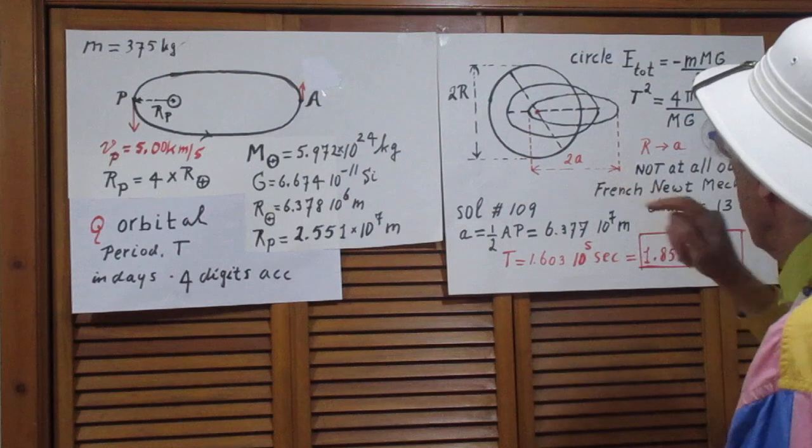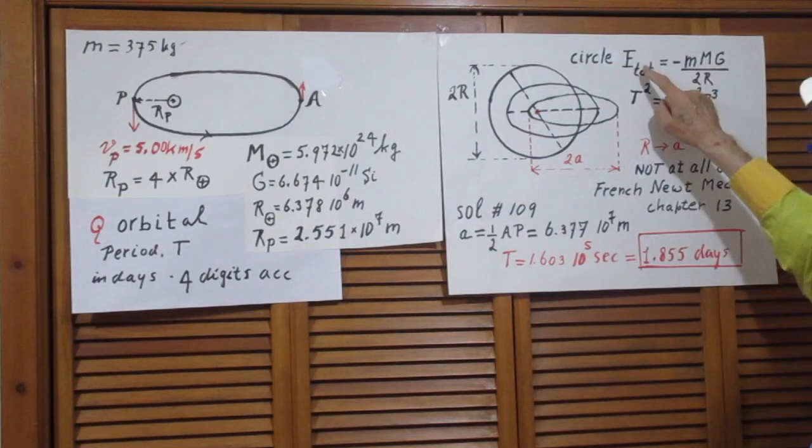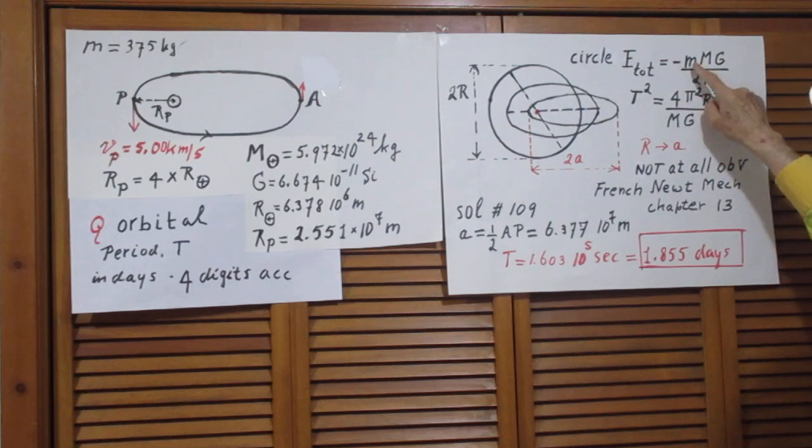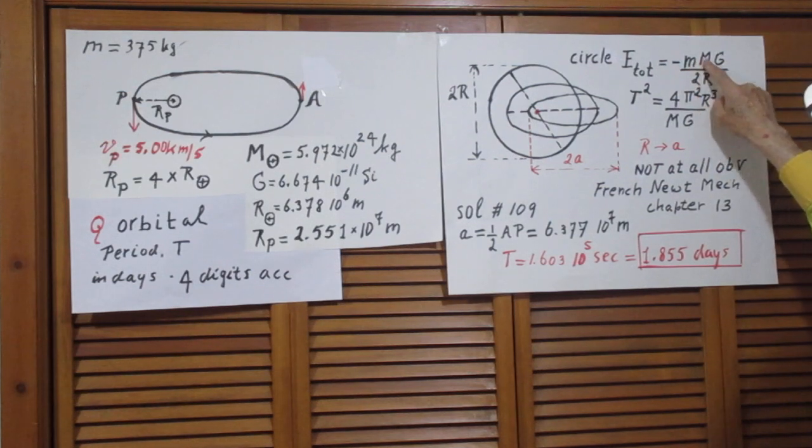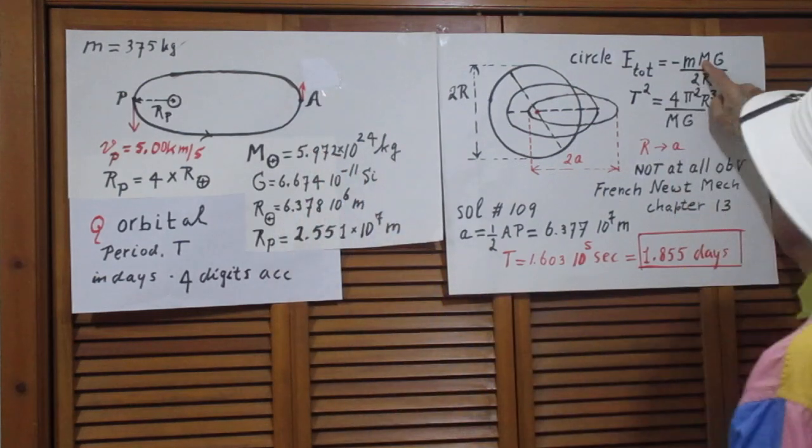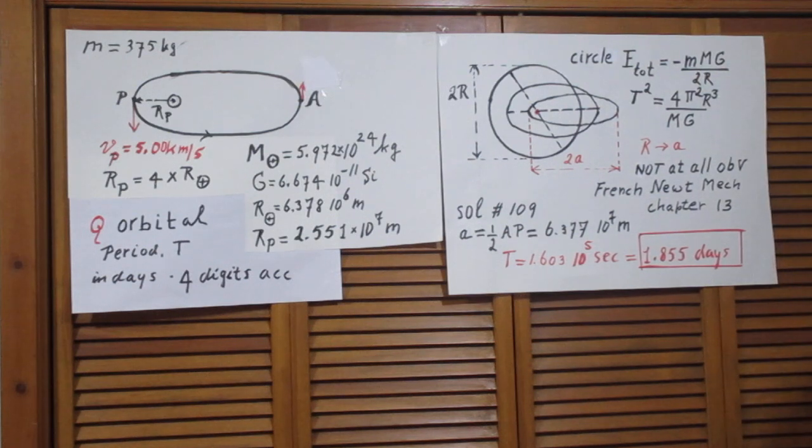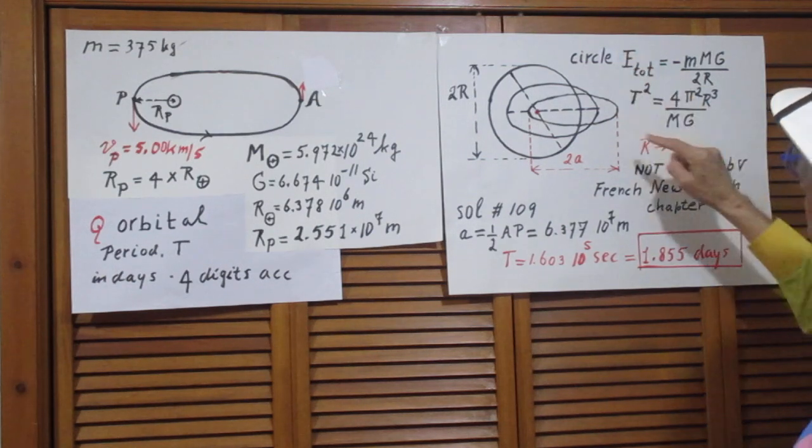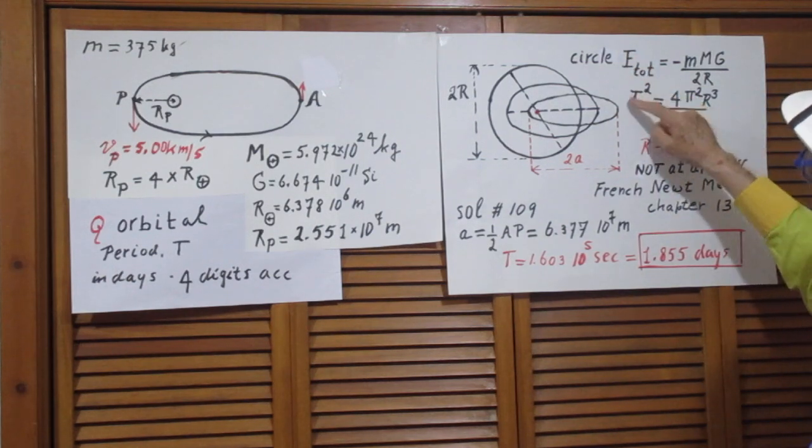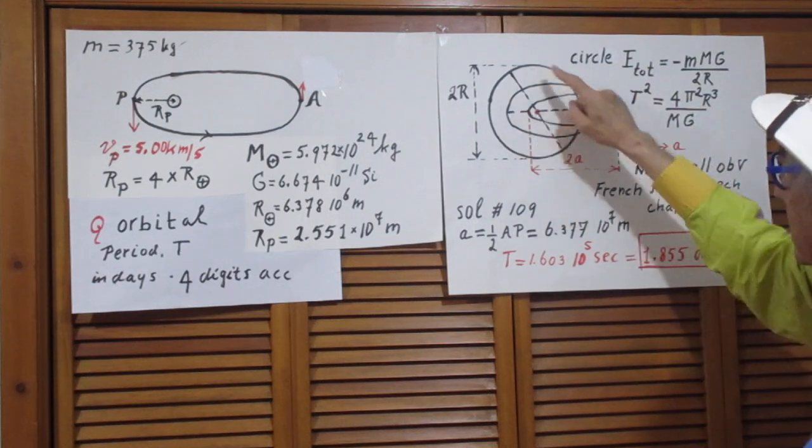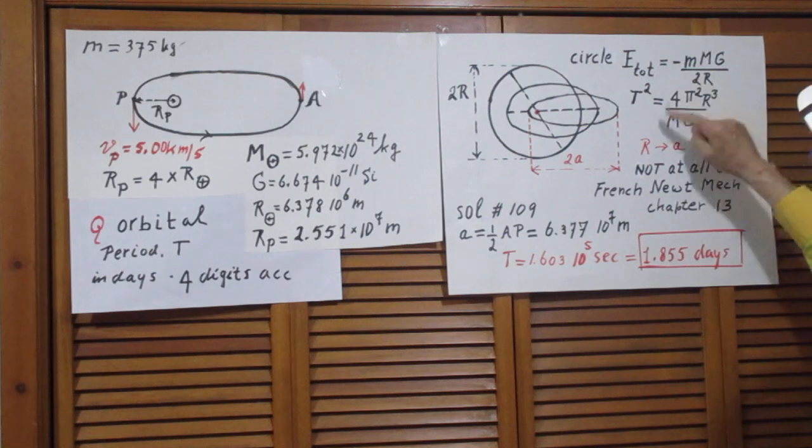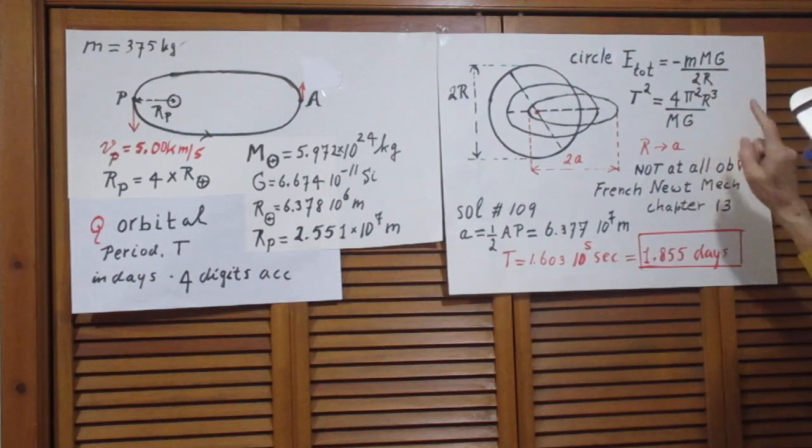For a circular orbit to show that the total energy of the circular orbit is minus little m, capital M which is the mass of the Earth, gravitational constant g divided by 2r. It is also utterly trivial. Also clearly high school problem that for a circular orbit the square of the period, time to go around, is this. 4 pi squared r to the third divided by mg.